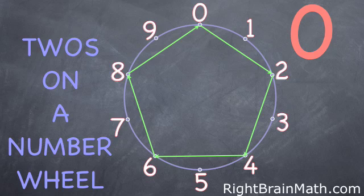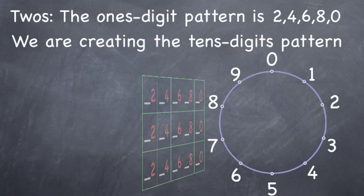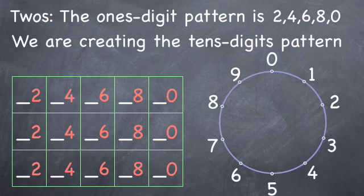Now how do we get off the number wheel and make bigger numbers? Let's use a table. We're looking at the patterns of the ones digits and tens digits separately and then putting them together to make the times table.